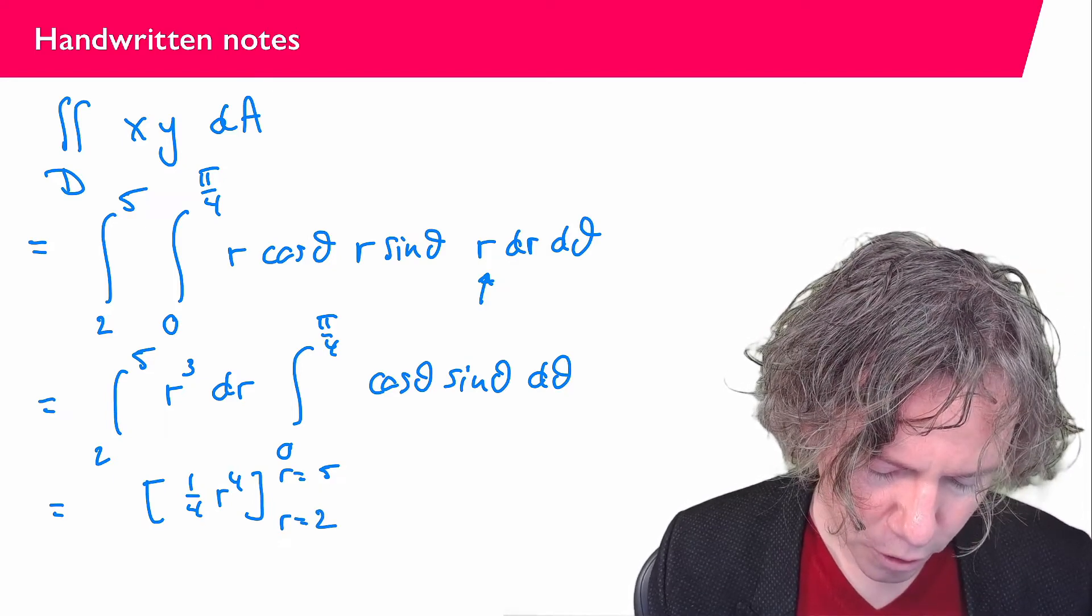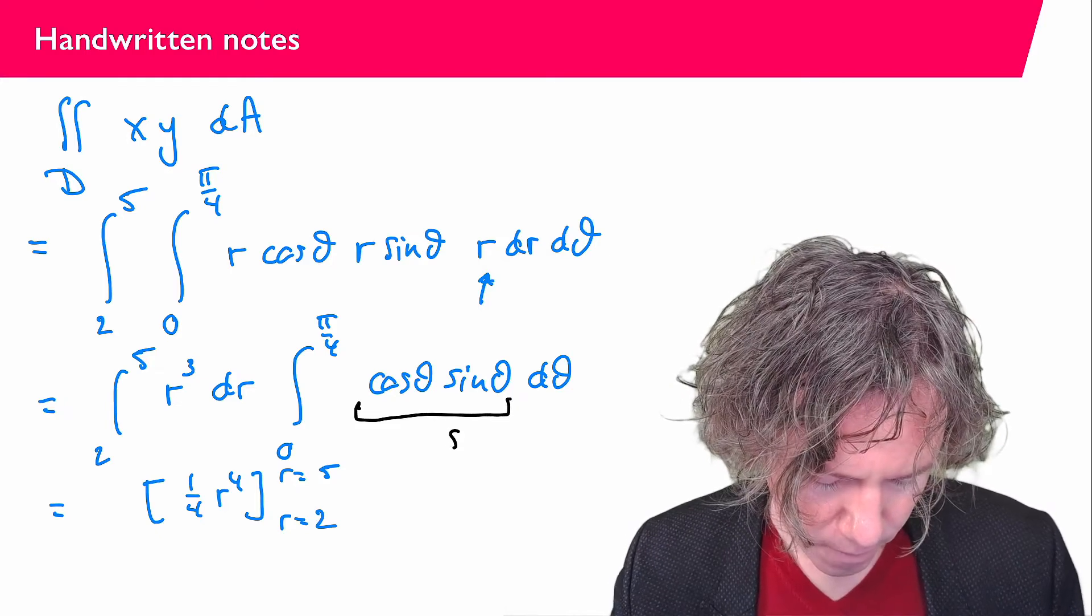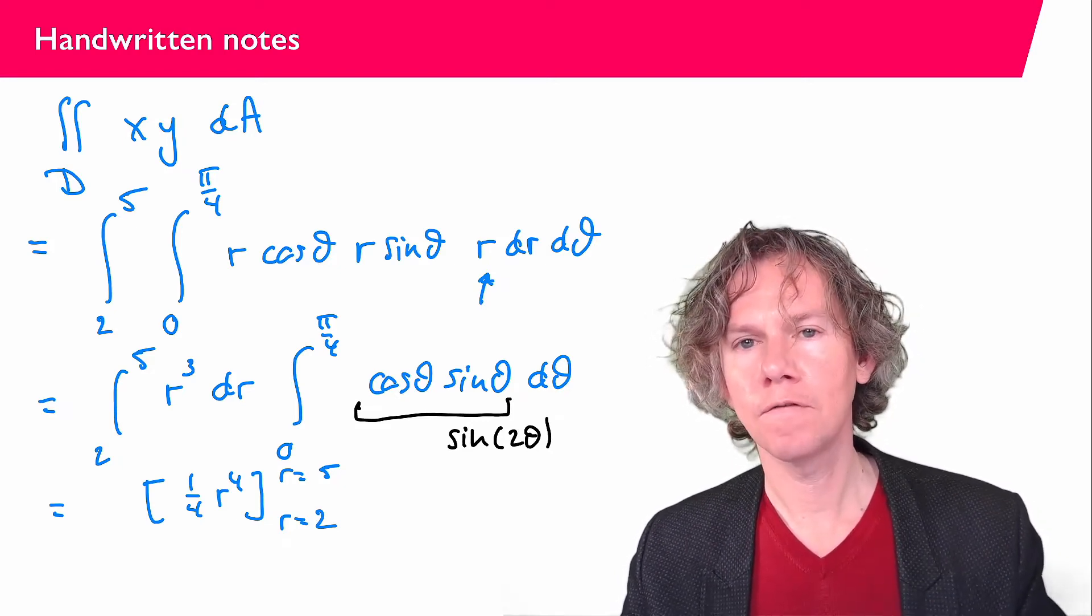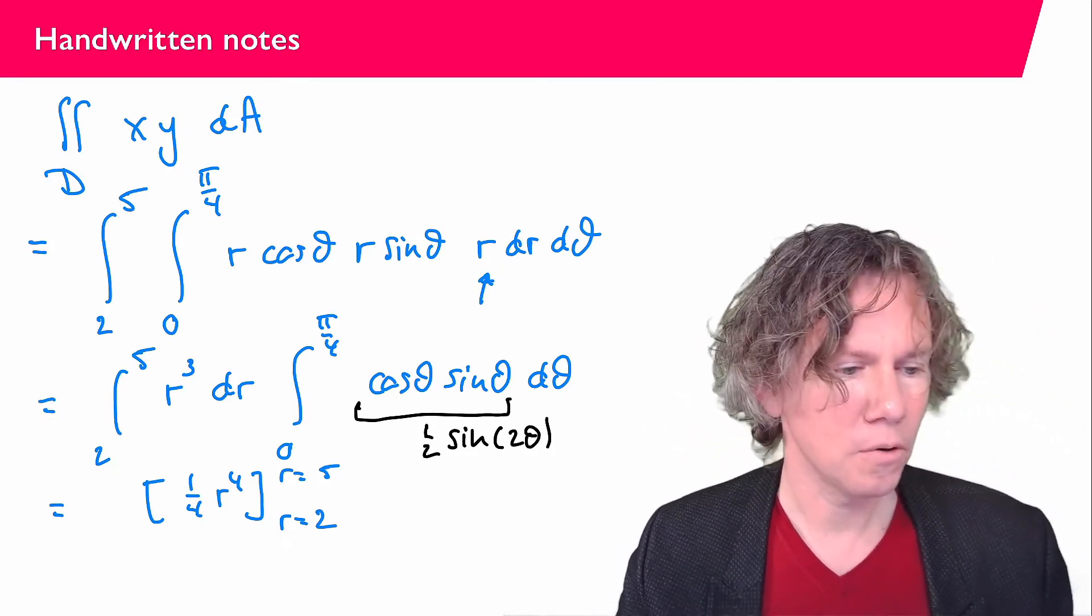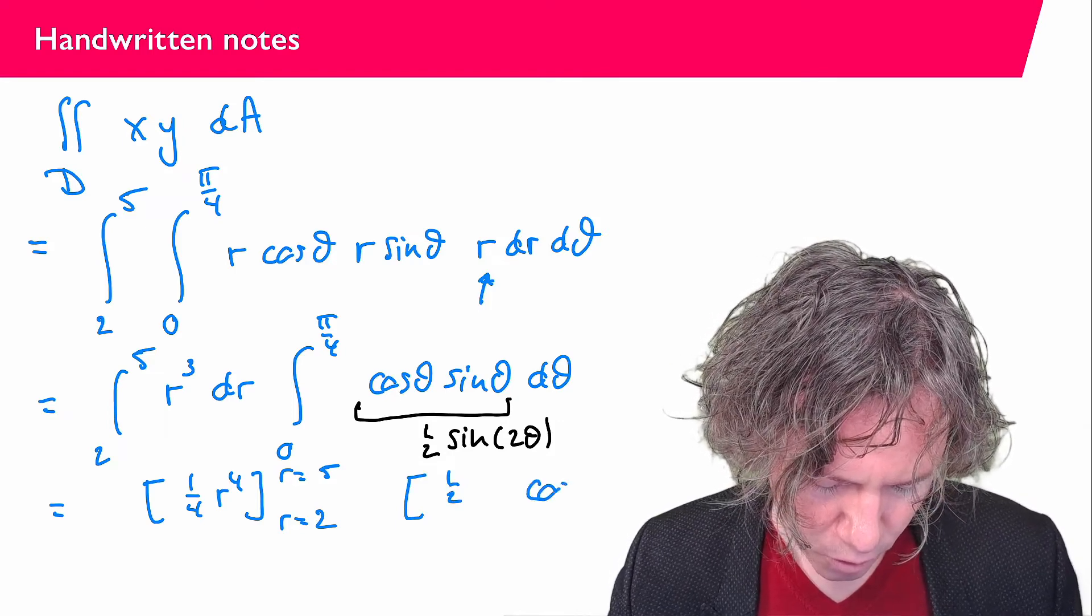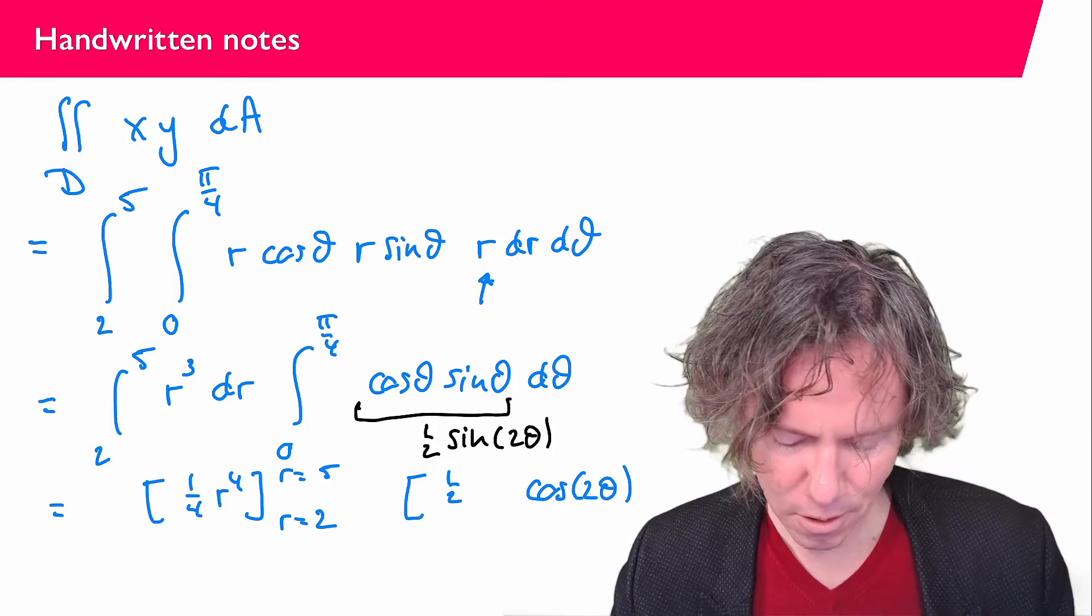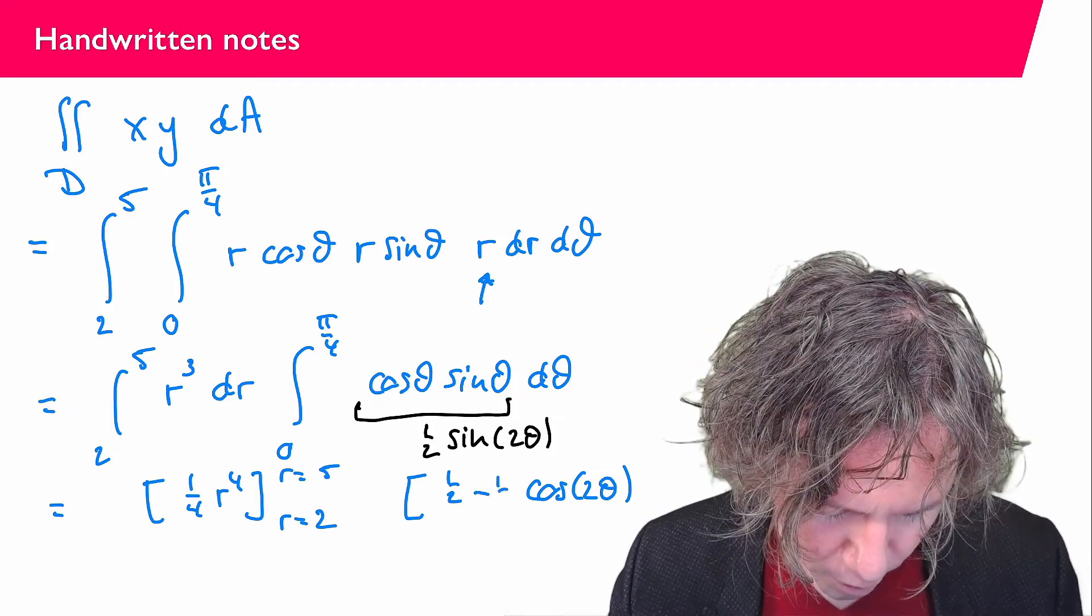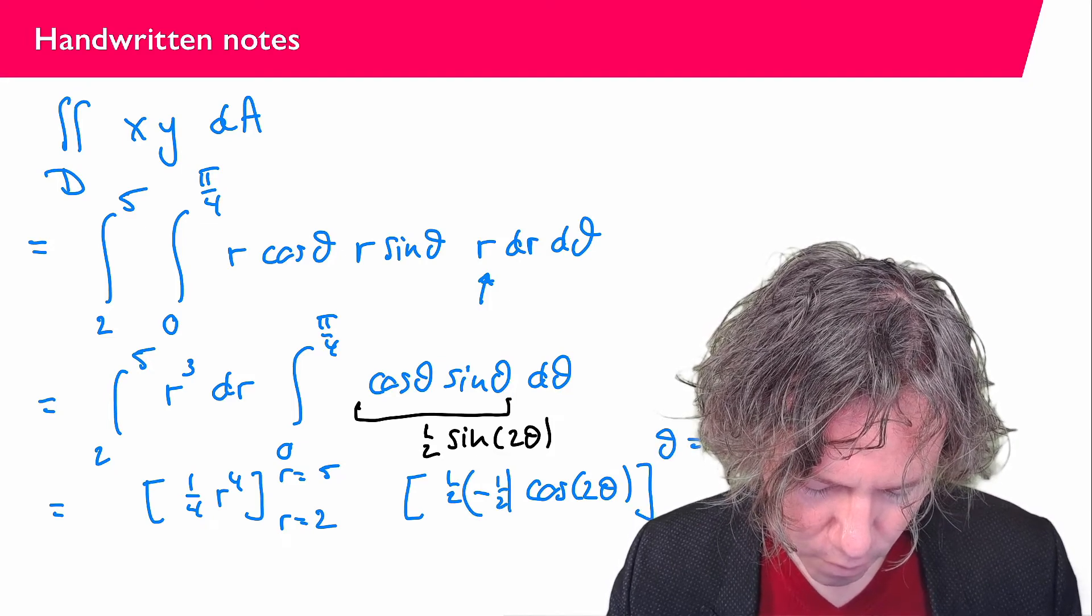And for the other one, what I'm going to be using is that this here, that is sine 2 theta. Well, not completely, because the sine of 2 theta is 2 times sine theta cosine theta. So I have to put 1 half here. So I can also easily find an antiderivative here. I just copy the 1 half. An antiderivative is cosine 2 theta. But if I differentiate cosine 2 theta, I get minus the sine. So I have to put an additional minus sign there. And with the chain rule, I would get an additional 2. So I have to put minus 1 half here. And then theta is in between pi over 4 and 0.